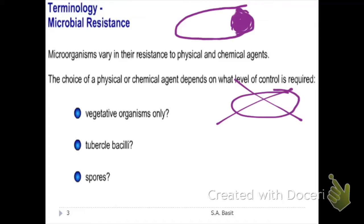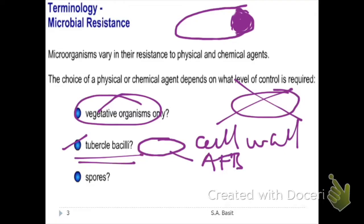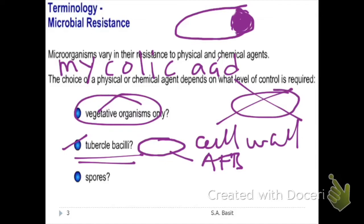We call tubercle bacilli AFB — acid-fast bacilli. The cell wall is different because it is waxy, made up of mycolic acid. The fact that it is made up of mycolic acid makes it more resistant compared to vegetative organisms. But the presence of calcium dipicolinate in the spores makes the spores highly resistant.